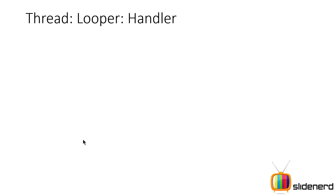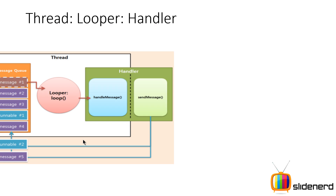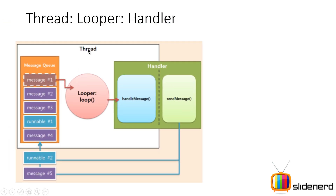So the first question you have is: what is this Thread, Looper, Handler? Let's take a simple diagram and try to understand. There's a rectangular box that says 'Thread', there is something called a 'message queue', and inside that there are little boxes that say 'messages'. There is something called a 'Runnable' and there's a 'Looper'. You see, a thread like your main thread has a message queue — every person who wants to perform a task on this thread will send a message on this message queue, and that is what these messages and runnables are all about.